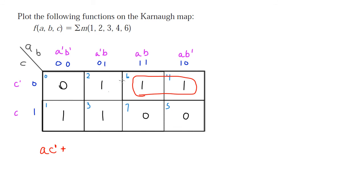For the second group, we can overlap with the previous group. Taking these two together, A is 0 and 1 — it's changing, so A is excluded. B stays the same, so we write B. Again, both cells are in the C=0 row, so we include C'. This gives us BC'.